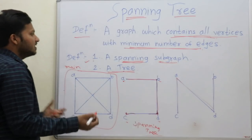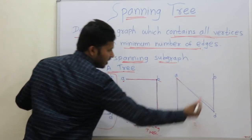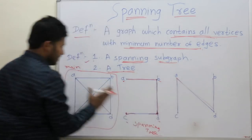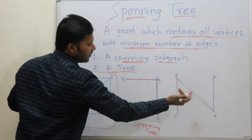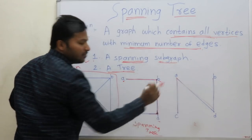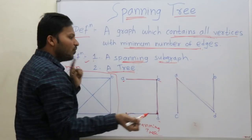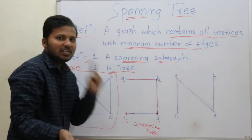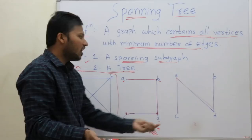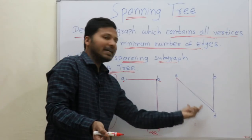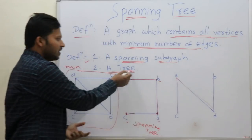The only condition is that it should contain all the vertices in the main graph and minimum number of edges. If you want to take minimum number of edges and if you want the graph to stay connected, because it is a tree...